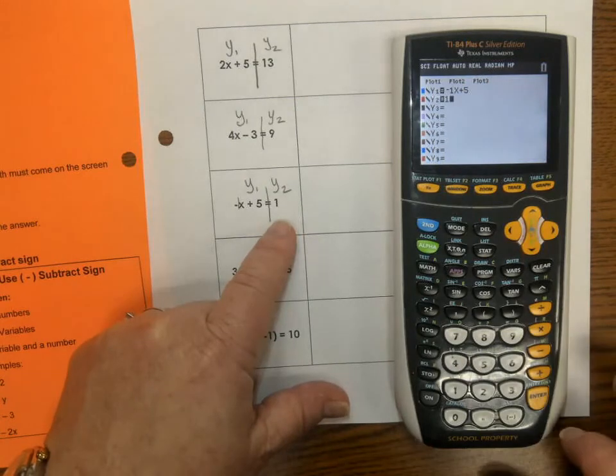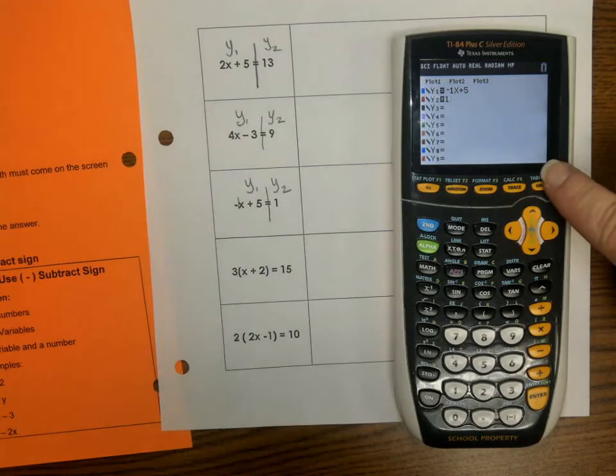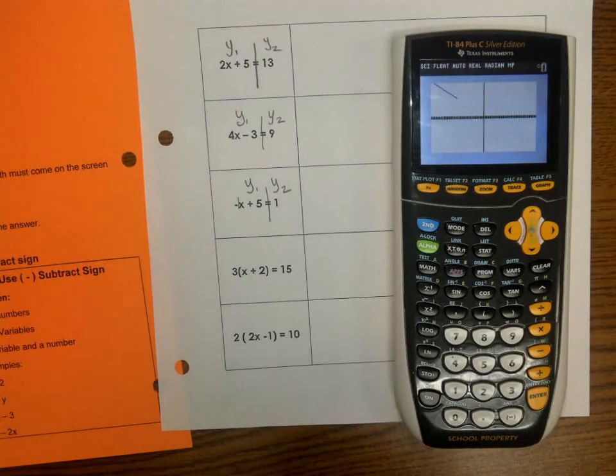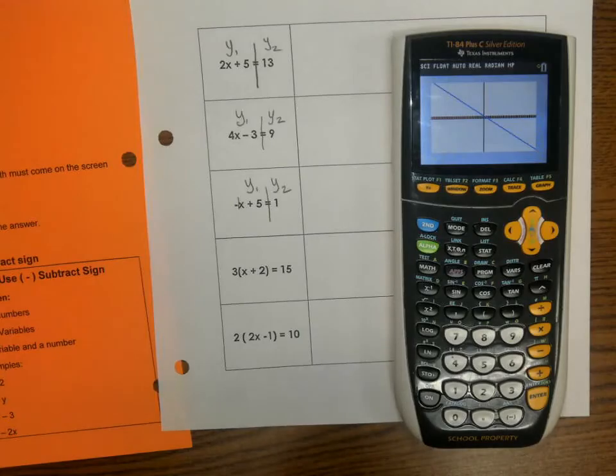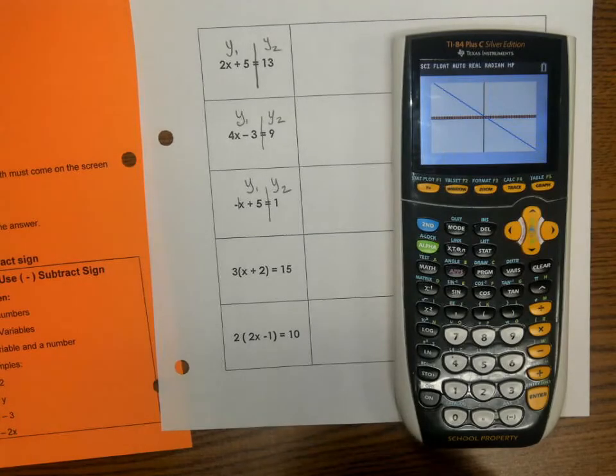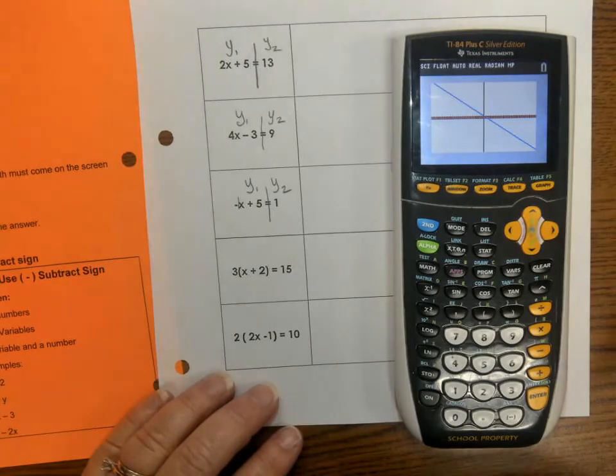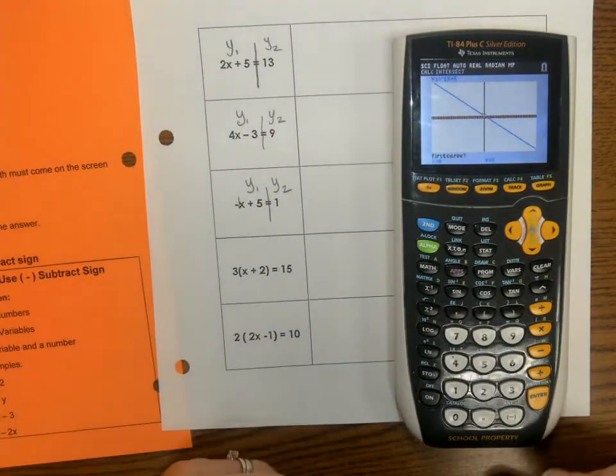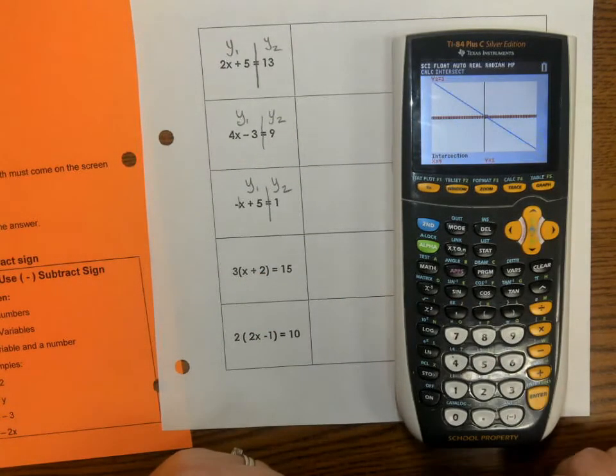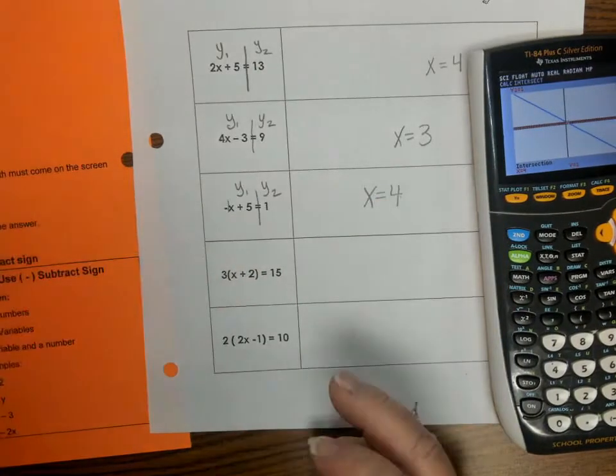Alright. Now, we're ready to solve. The first thing we press is, hopefully, you said graph to yourself. And you pressed your graph key. Waiting for the graph. Do you see how a negative line goes down? And a positive line goes up. So, this is going to have a negative slope. And the other line went across. But you could barely see it. It's right on the X axis almost. So, then we're going to press 2nd. And trace. And we want the intersection, which is 5. Enter. Enter. Enter. And we have the intersection at 4 and 1. X equals 4.